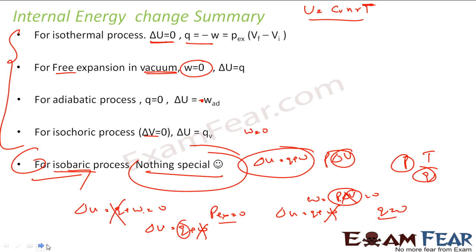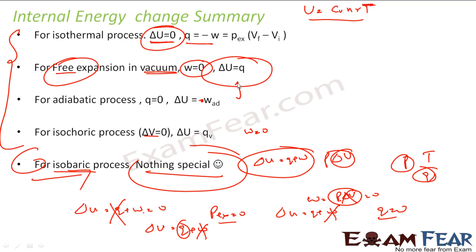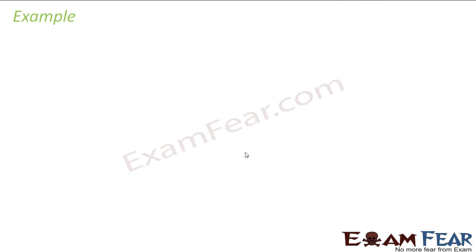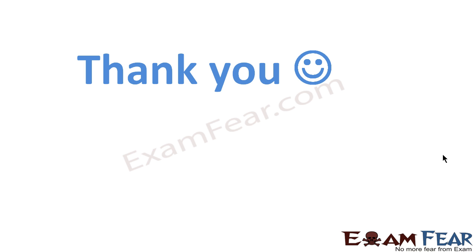So this is the summary of internal energy change for various processes: For isothermal — zero internal energy change. For free expansion — delta U equals heat supplied. For adiabatic — delta U equals work done. For isochoric — delta U equals heat supplied. For isobaric — we must account for both heat supplied and work done using the general formula.